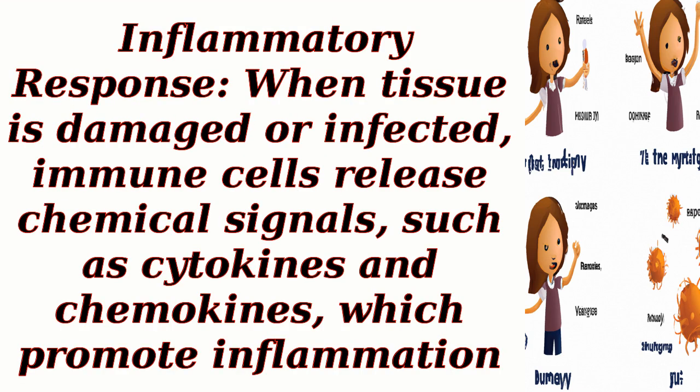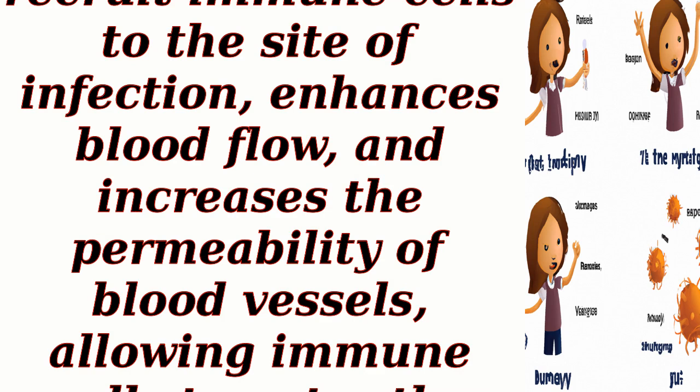Inflammatory response: when tissue is damaged or infected, immune cells release chemical signals such as cytokines and chemokines, which promote inflammation. This process helps recruit immune cells to the site of infection, enhances blood flow, and increases the permeability of blood vessels, allowing immune cells to enter the affected tissues.